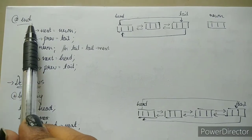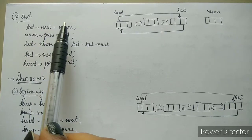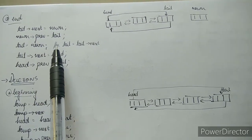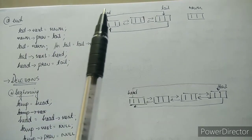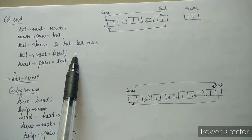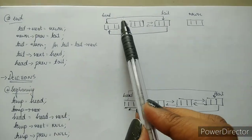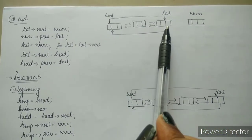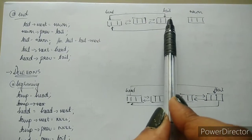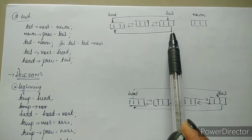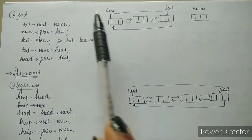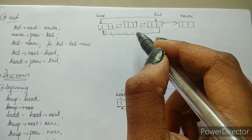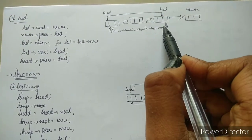Now coming to insertion at the end. The code snippet: tail's next is new node, new node's previous is tail, tail is new node (or tail is tail's next — use either one, not both), then tail's next is head and head's previous is tail. You have a linked list with head and tail known. You make tail point to new node — so tail's next is new node and the old link is erased.